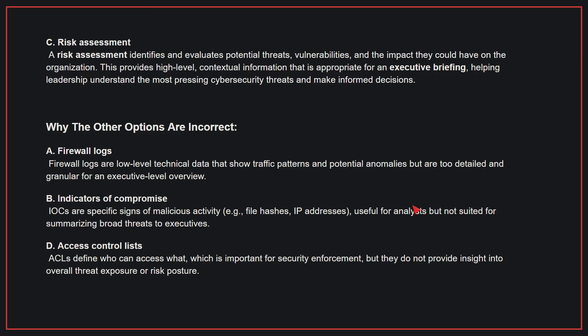Why the other options are incorrect? A. Firewall logs. Firewall logs are low-level technical data that show traffic patterns and potential anomalies, but are too detailed and granular for an executive-level overview. B. Indicators of compromise. IOCs are specific signs of malicious activity, useful for analysts but not suited for summarizing broad threats to executives. D. Access control lists. ACLs define who can access what, which is important for security enforcement, but they do not provide insight into overall threat exposure or risk posture. Therefore, the correct answer is C.